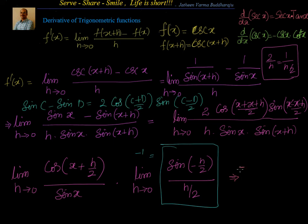If I substitute h equal to 0, I have minus of cos x by sin x. We have forgotten something else here, that is sin of x plus h. So if you substitute h equal to 0, you will get one more sin x. That is minus of cosecant x multiplied by cot x.